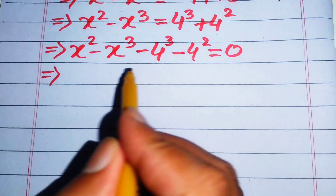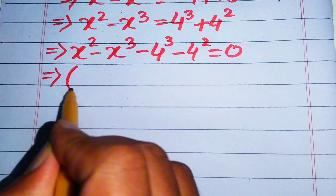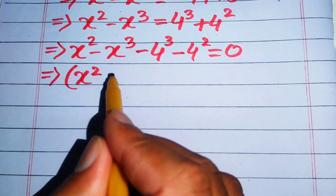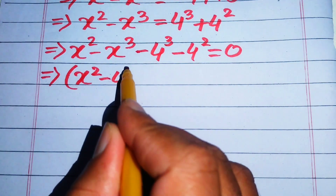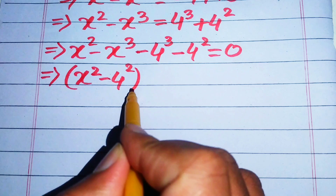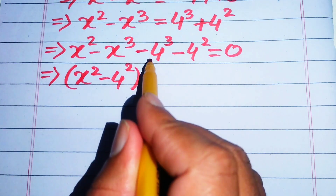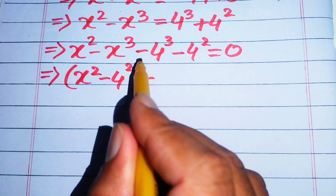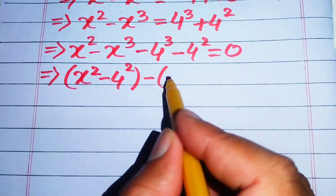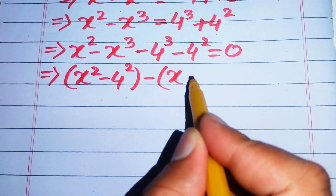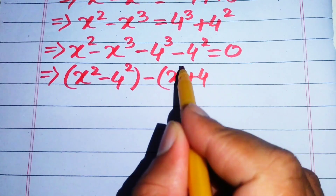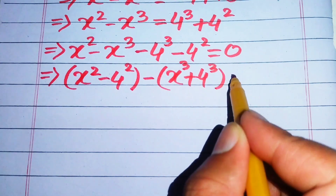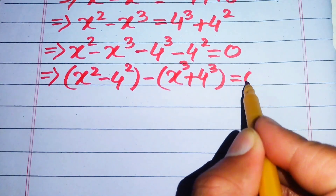Here we make pairs: the cubic term with cubic term, and the square term with square term. The square terms are x squared minus 4 squared, and the two cubic terms are grouped together. We take a common minus sign from the cubic terms, and it is written as minus of x cubed plus 4 cubed equals zero.